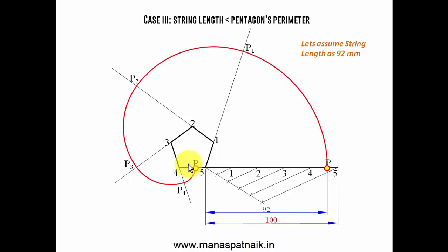When you join all of them, that's exactly what you're going to have. So that's the involute of a regular pentagon whose string length is less than the pentagon's perimeter. So guys that was all from my side for today. If you've got any doubt or query, write them down in the comment section below. I'll be very happy to answer them.